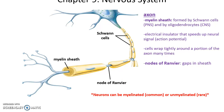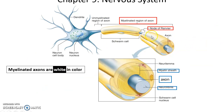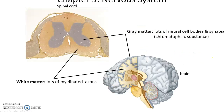Axons are often myelinated by Schwann cells or oligodendrocytes. This acts as an electrical insulator that helps speed up the transmission of the action potential. The Schwann cell or oligodendrocyte wraps tightly around that portion of the axon many, many times. There are also little gaps in the myelin sheath called nodes of Ranvier. Some neurons are unmyelinated, but most are myelinated. The myelination is white in color. When you look at a cross-section of spinal cord or brain tissue, you will see white areas — white because there are lots of myelinated axons — and gray matter, gray because there are lots of cell bodies filled with chromatophilic substance, and also a lot of synapsing occurring in that area.